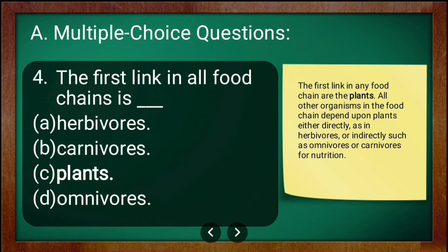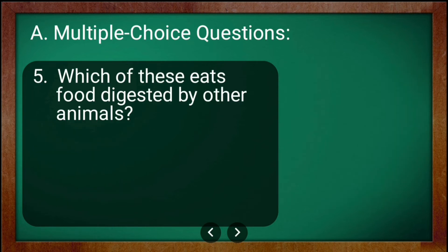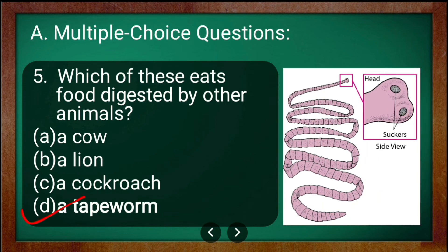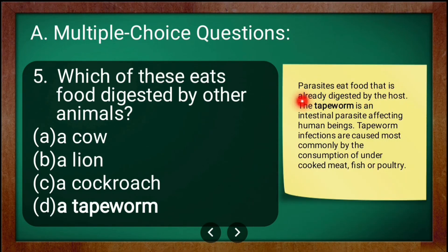Question five: which of these eats food digested by other animals? The options are cow, lion, cockroach, and tapeworm. The answer is tapeworm. Tapeworms eat food that is already digested by the host. Parasites eat food digested by their host, and tapeworms are intestinal parasites that affect human beings.